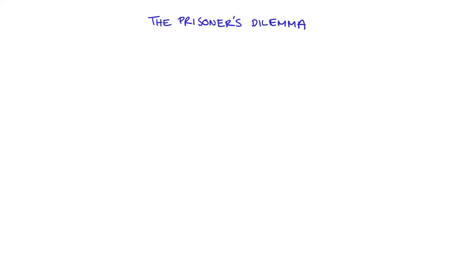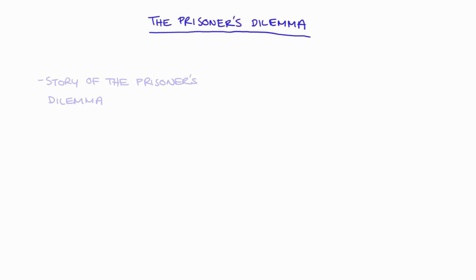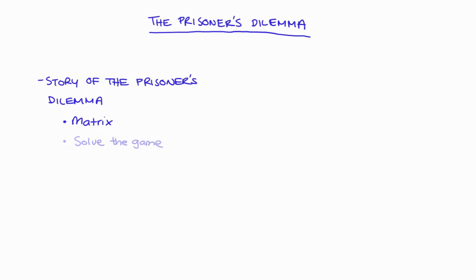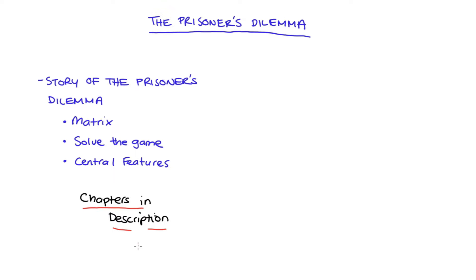Hi everyone! I had a request asking for a video about The Prisoner's Dilemma, and yes I certainly can do a video — or maybe even three or four videos — about this game because I actually really love this game. This video will center around the story of The Prisoner's Dilemma, how we present the information in a matrix, solving for the equilibrium outcome, and the central features of the game. I'll include chapters in the description below if you want to skip to any particular part.